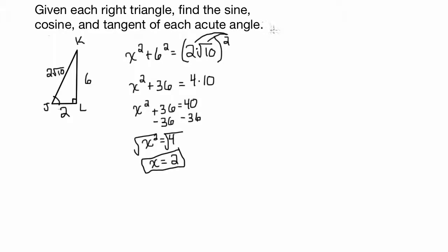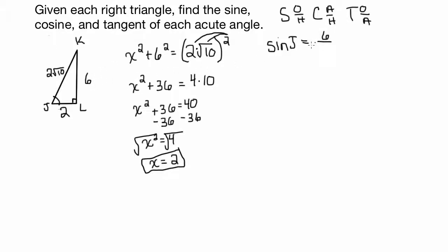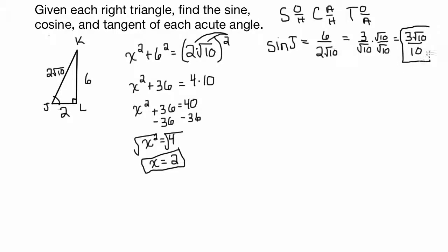Let's start with angle J. The sine of angle J — remember SOHCAHTOA — the sine of an angle is the opposite side over the hypotenuse. For angle J, opposite is 6 and hypotenuse is 2 root 10, so that simplifies to 3 over root 10. We need to rationalize the denominator, so we multiply by root 10 over root 10, and this becomes 3 root 10 over 10.